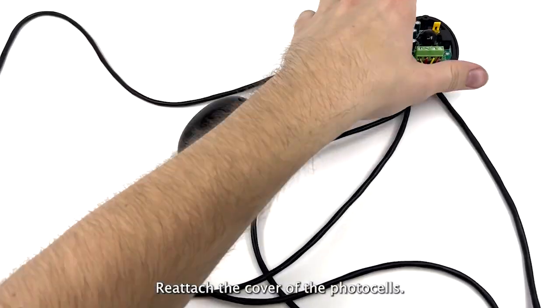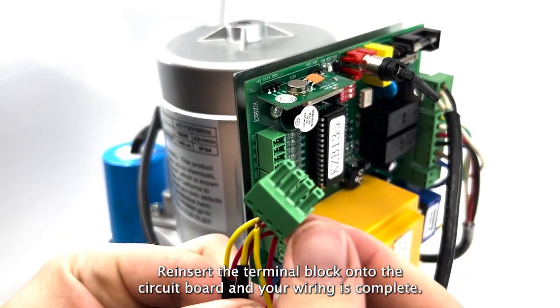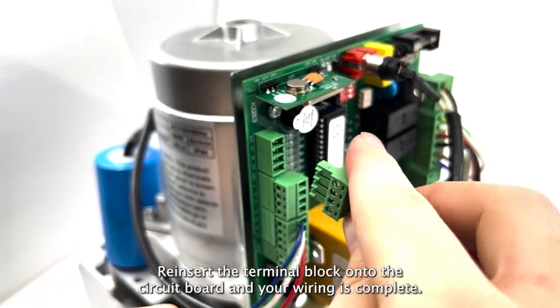Reattach the cover of the photocells. Reinsert the terminal block onto the circuit board and your wiring is complete.